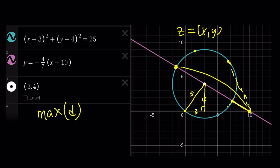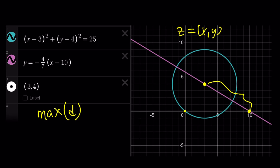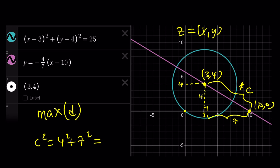To find that maximum distance, first find the distance between the center 3 comma 4 and the point 10 comma 0 using the Pythagorean theorem. Going from 3 comma 4 down to 10 comma 0 gives a vertical leg of 4 and a horizontal leg of 7 (since 10 minus 3 equals 7). So c² equals 4² plus 7², which is 16 plus 49, giving c equals the square root of 65.